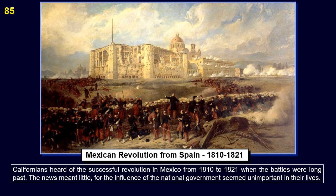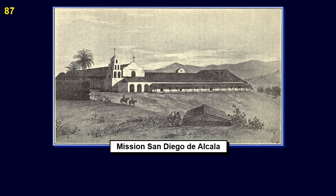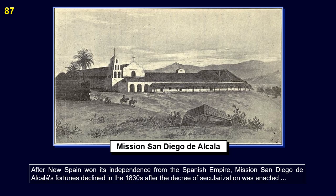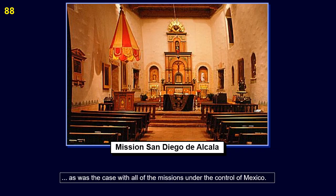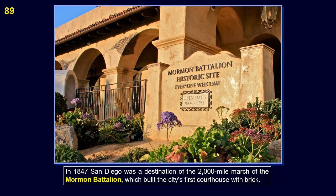Californians heard of the successful revolution in Mexico from 1810 to 1821 when the battles were long past; the news meant little, for the influence of the national government seemed unimportant in their lives. On April 20, 1822, the Mexican flag was raised over the Presidio and San Diego swore their allegiance to it. Luis Arguello was appointed the first Mexican governor. After New Spain won its independence from the Spanish Empire, Mission San Diego de Alcala's fortunes declined in the 1830s after the decree of secularization was enacted, as was the case with all of the missions under the control of Mexico. In 1847 San Diego was a destination of the 2,000-mile march of the Mormon Battalion, which built the city's first courthouse with brick.